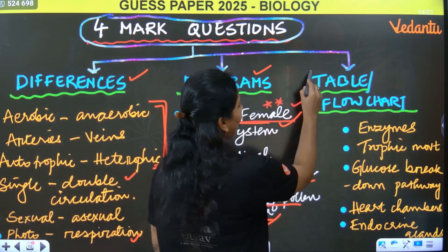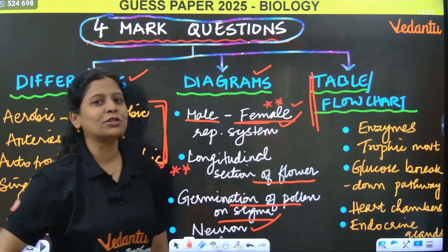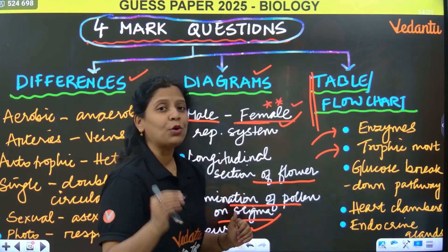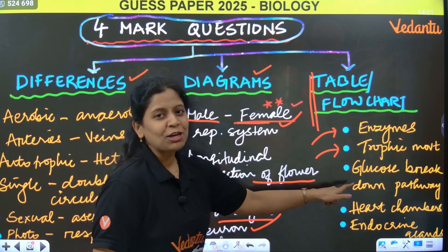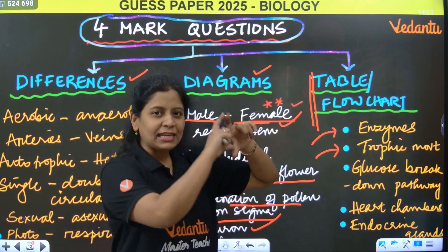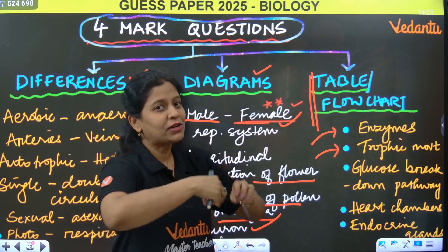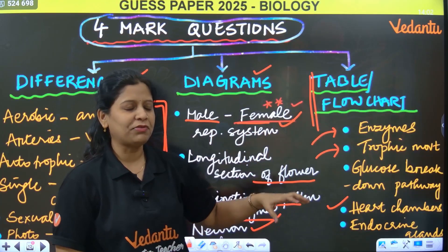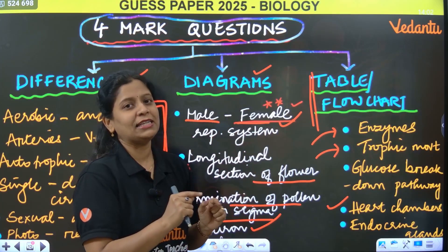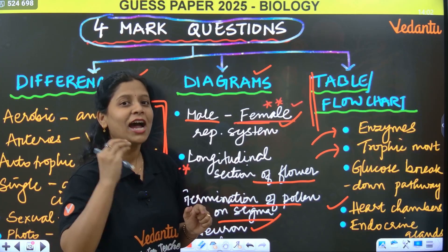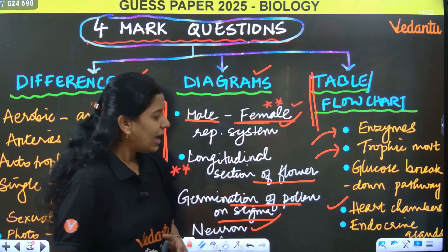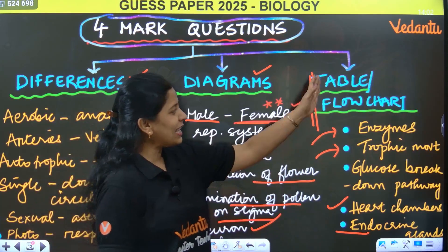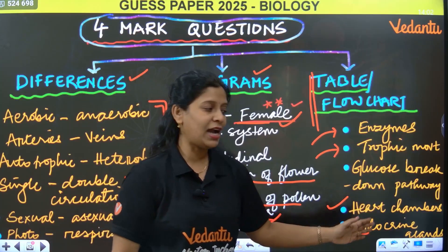Let's move on to table or flow chart — also very important 4-mark questions. Enzyme table — digestive enzyme tables you must learn. Tropic movement related — a table will be asked. Glucose breakdown pathway in respiration chapter — flow chart questions will be asked. Then the heart has different chambers — right atrium, right ventricle, left atrium, left ventricle, blood vessels — a flow chart for this may come. Endocrine glands in the human body — which hormone is secreted from which gland — all these are important questions for tables and flow charts.